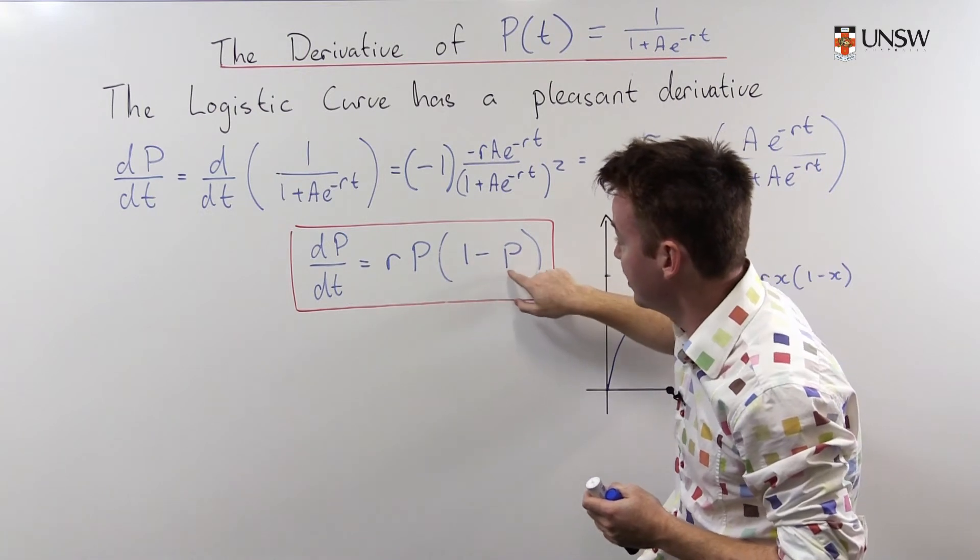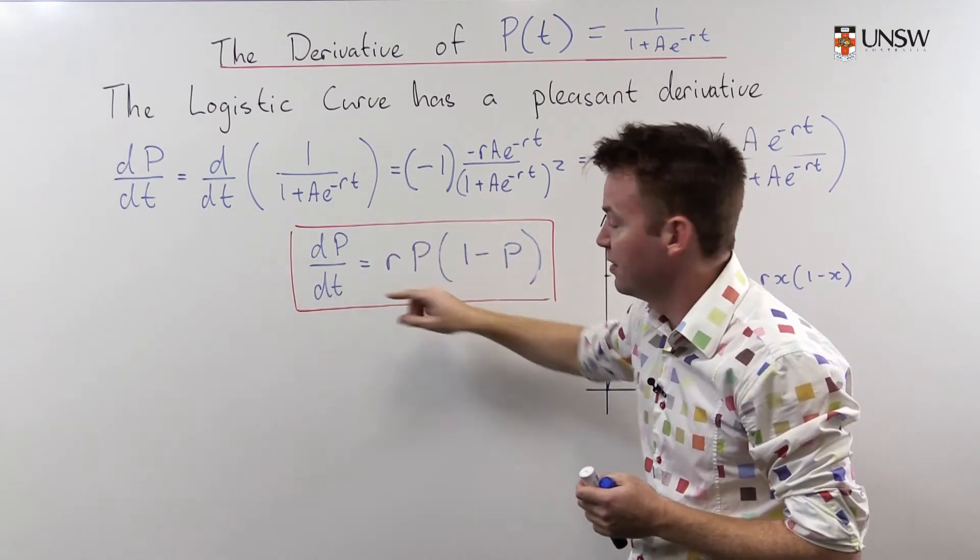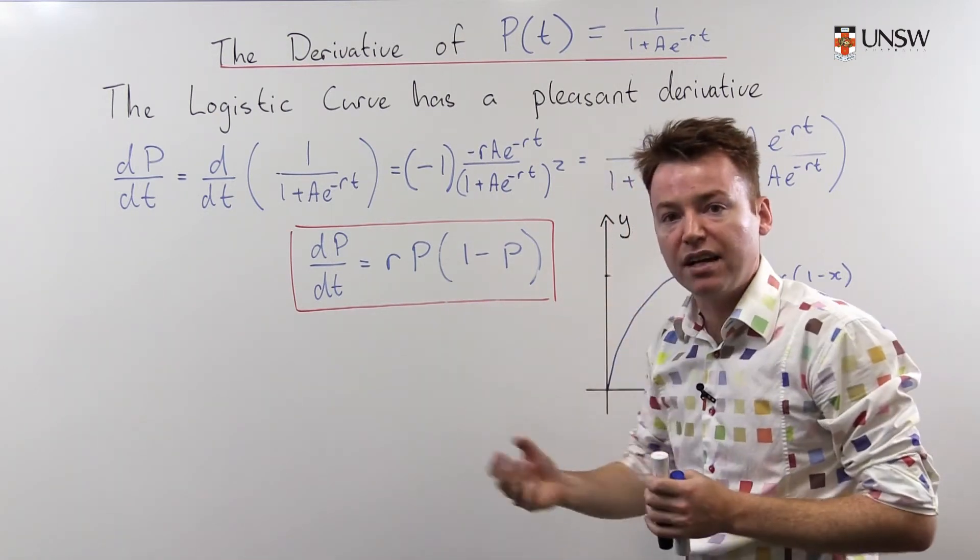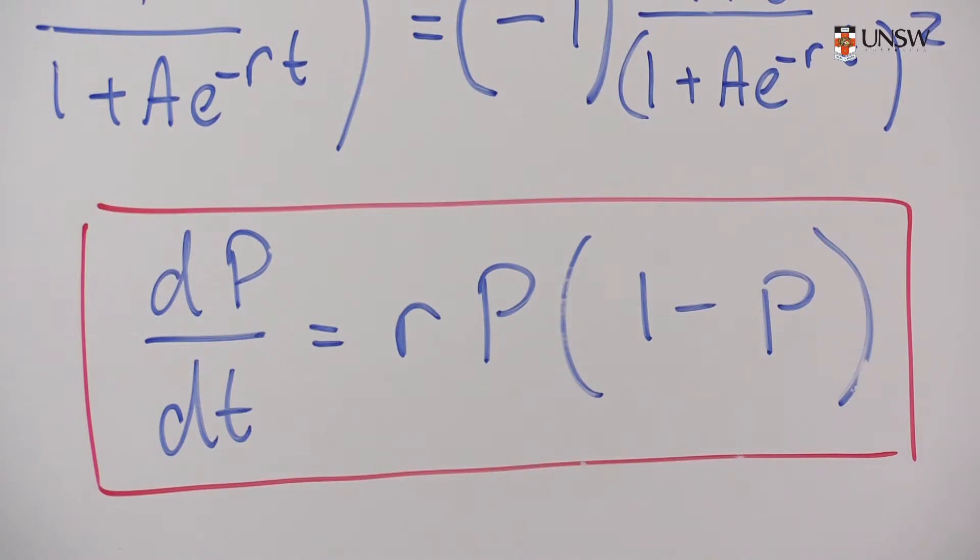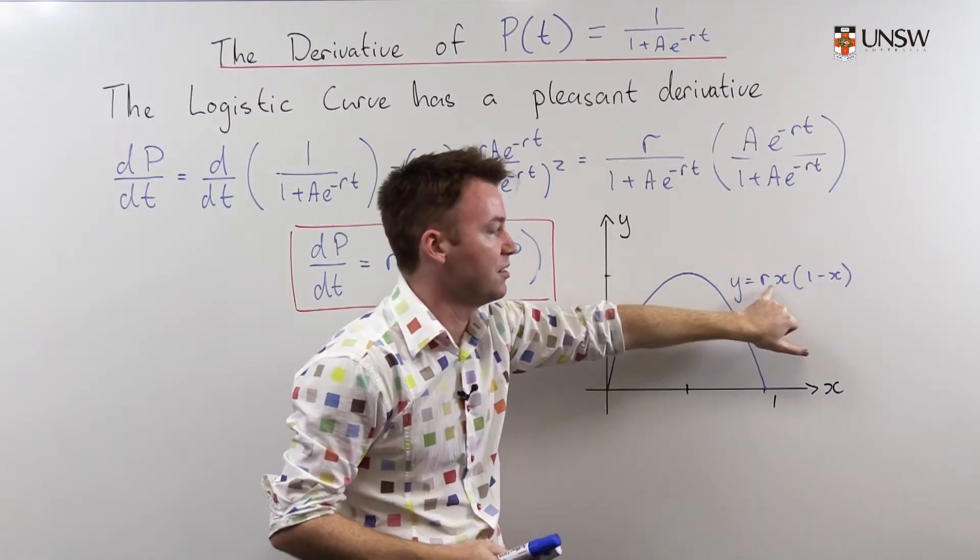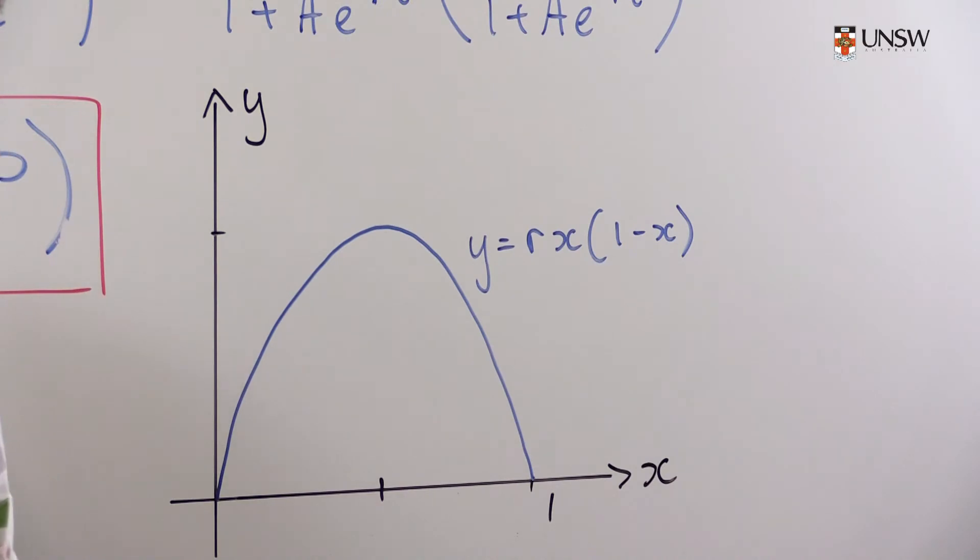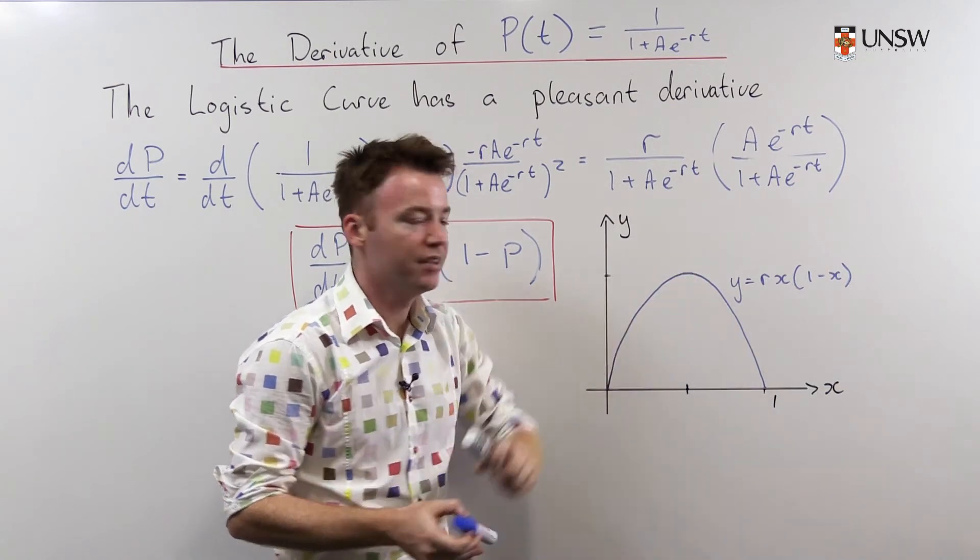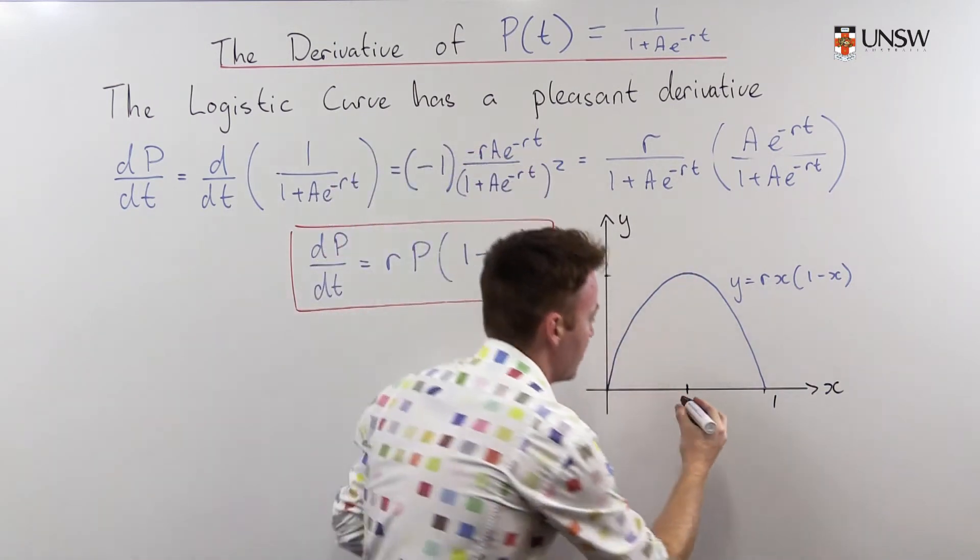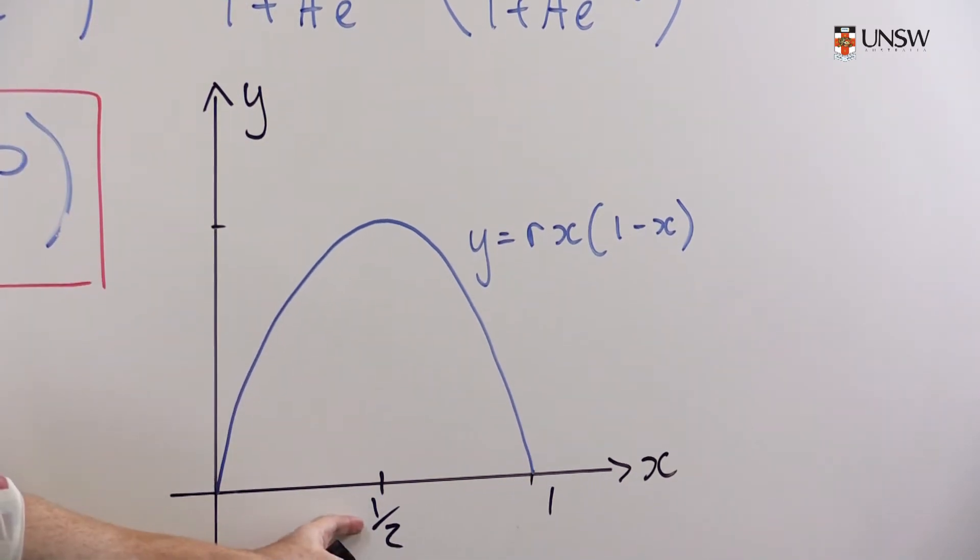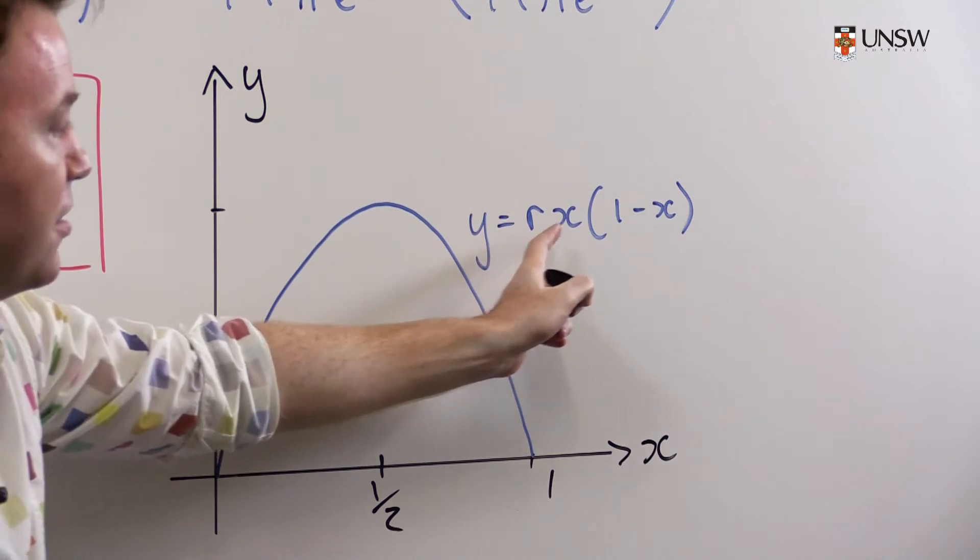As population gets close to 1, this derivative again goes close to 0. So it peters out as it approaches this natural limit. What is the fastest rate of growth? How big can this possibly be? Here I have the function y equals r times x times 1 minus x. We can recognize that this will achieve its maximum value at x equals 1 half. And its maximum value will be just r times 1 half times 1 half. So that's equal to r over 4.